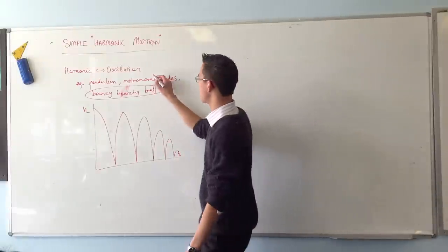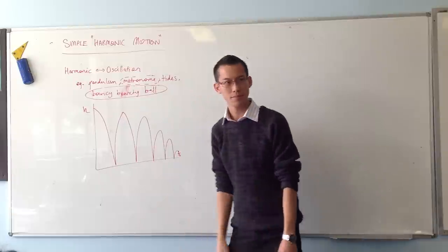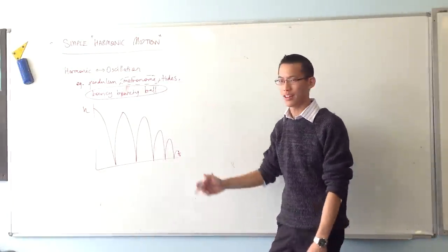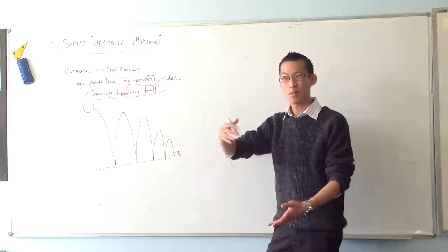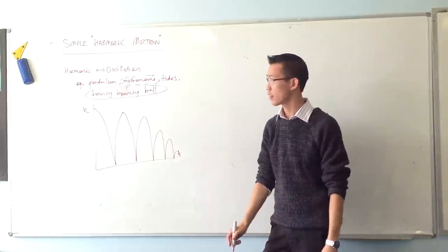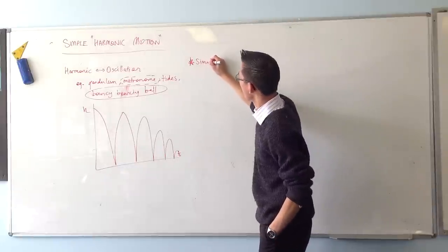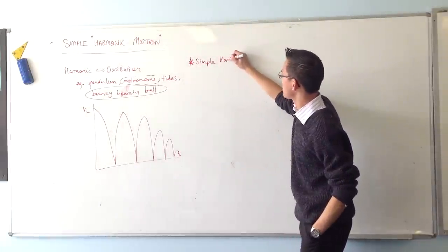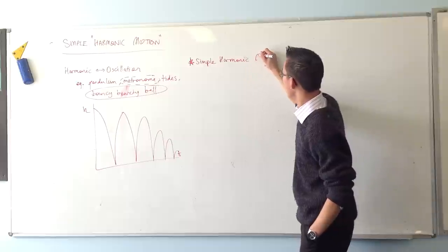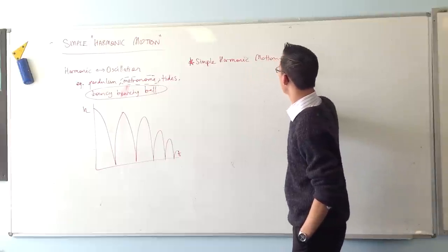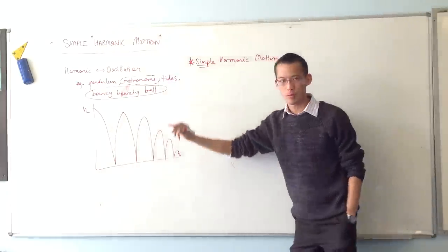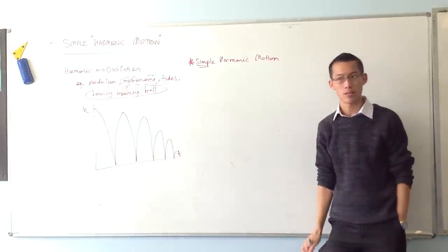So, therefore, maybe a metronome is a good example. Because it's actually being driven, and that's the point of it. It's going to be rhythmic, and it's going to keep on going at a particular frequency. So, here's the important thing about simple harmonic motion. There are two ways to define this. I'm going to give you the visual intuitive one first, and then we'll have a look at the algebraic one.